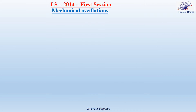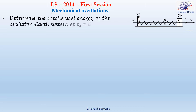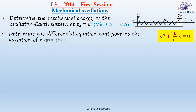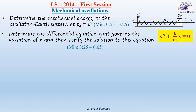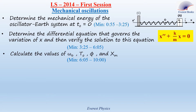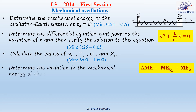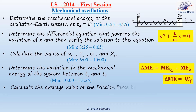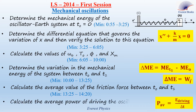In this solved official exam exercise, we are going to: determine the mechanical energy of the oscillator-Earth system at time zero; determine the differential equation that governs the variation of the abscissa and then verify the solution; calculate the values of the natural angular frequency, natural period, initial phase angle, and amplitude; determine the variation in the mechanical energy between T0 and T1; calculate the average friction force and average power of driving the oscillations between T0 and T1.